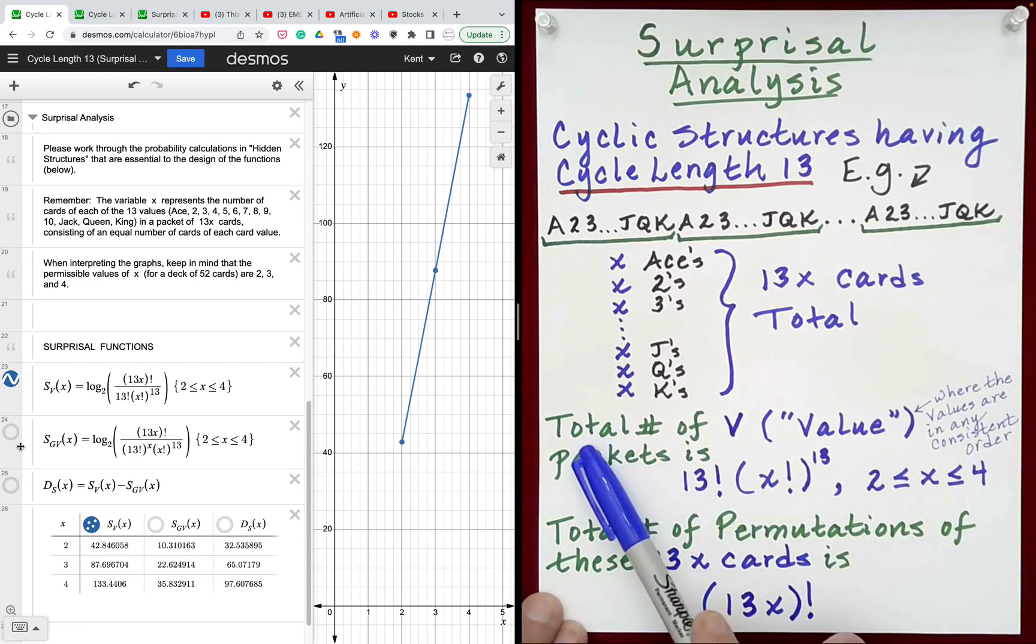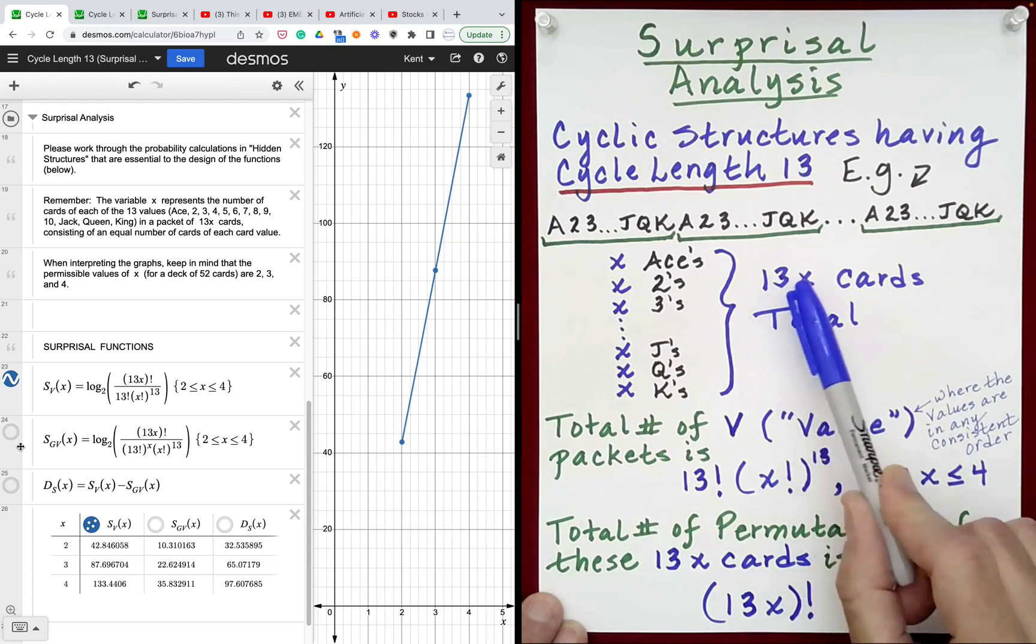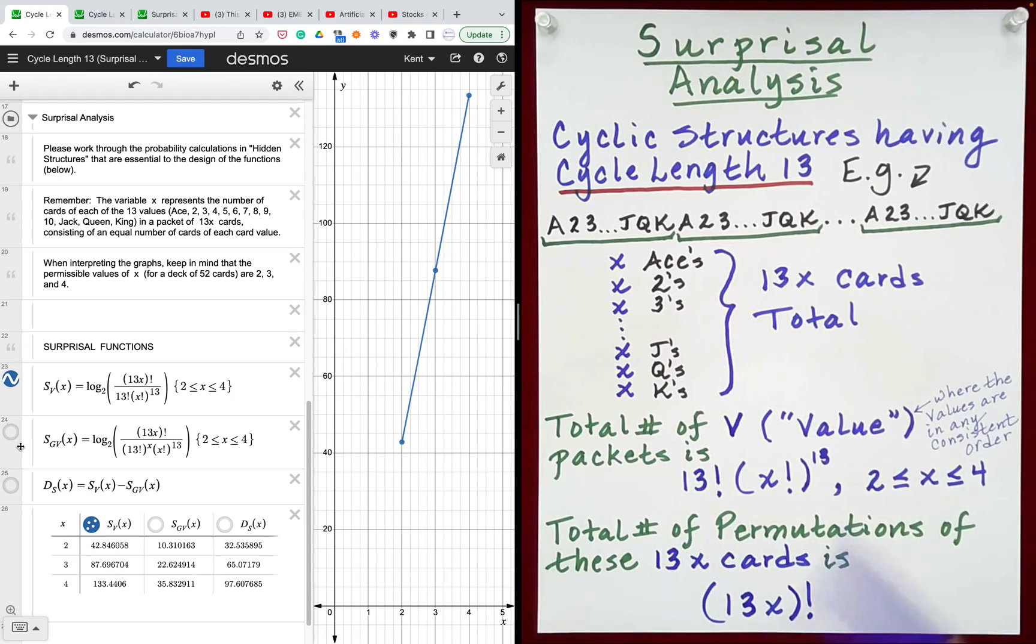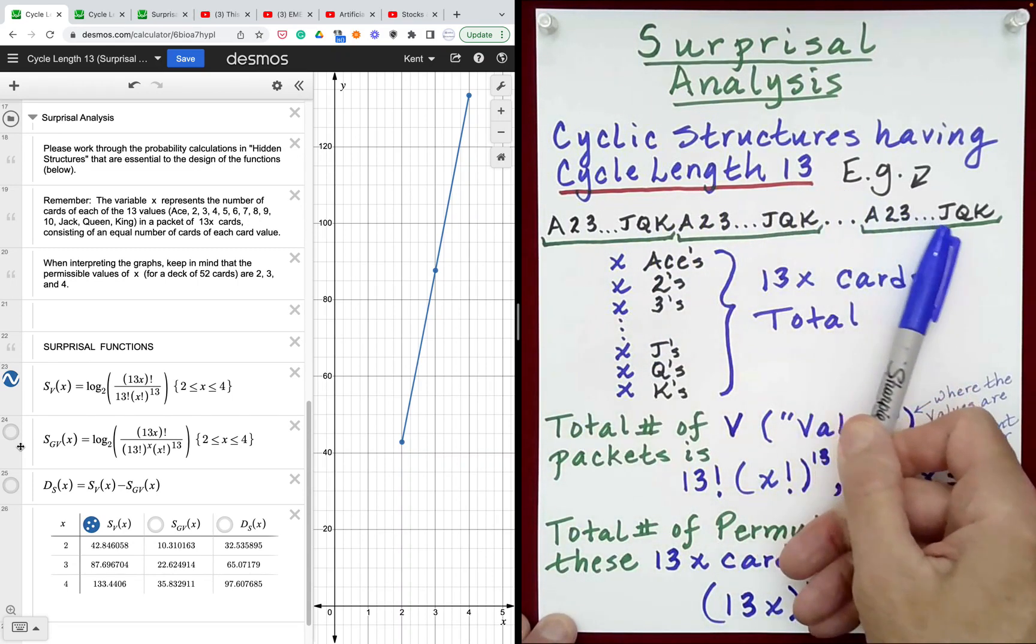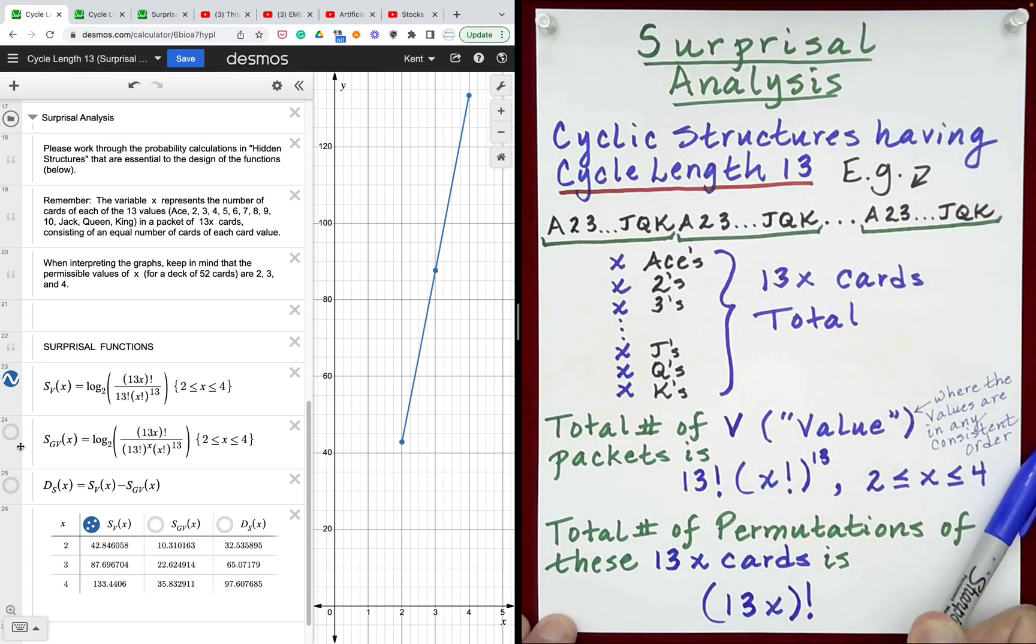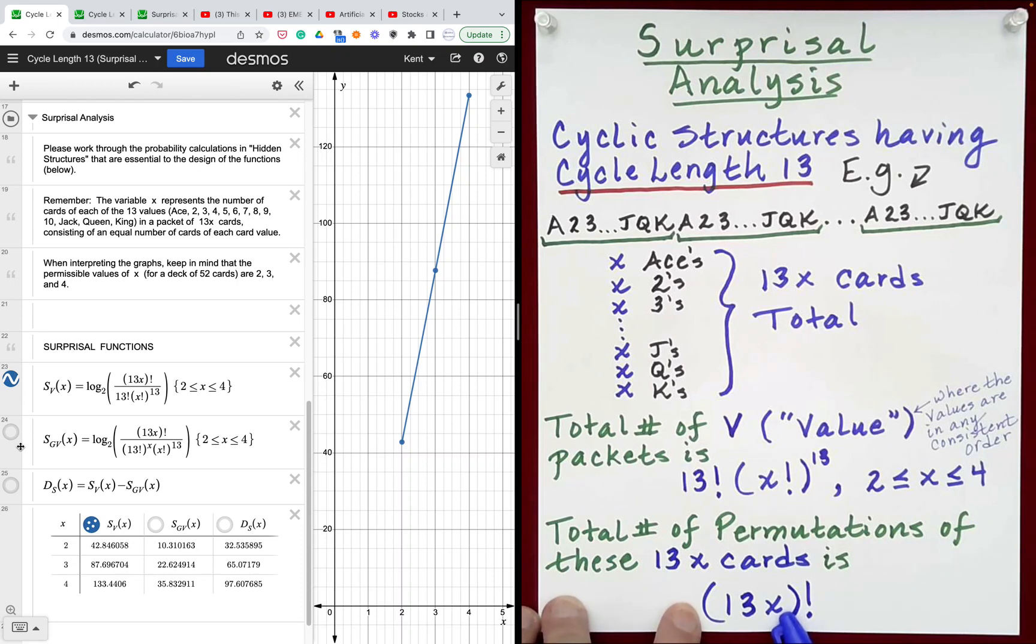In other words, this is the number of ways that the 13 times x cards could be randomized and found to have a cyclic structure relative to the 13 card values. There are many ways of doing this, but there are far more permutations of these cards, and as we'll see, that is an enormous value.